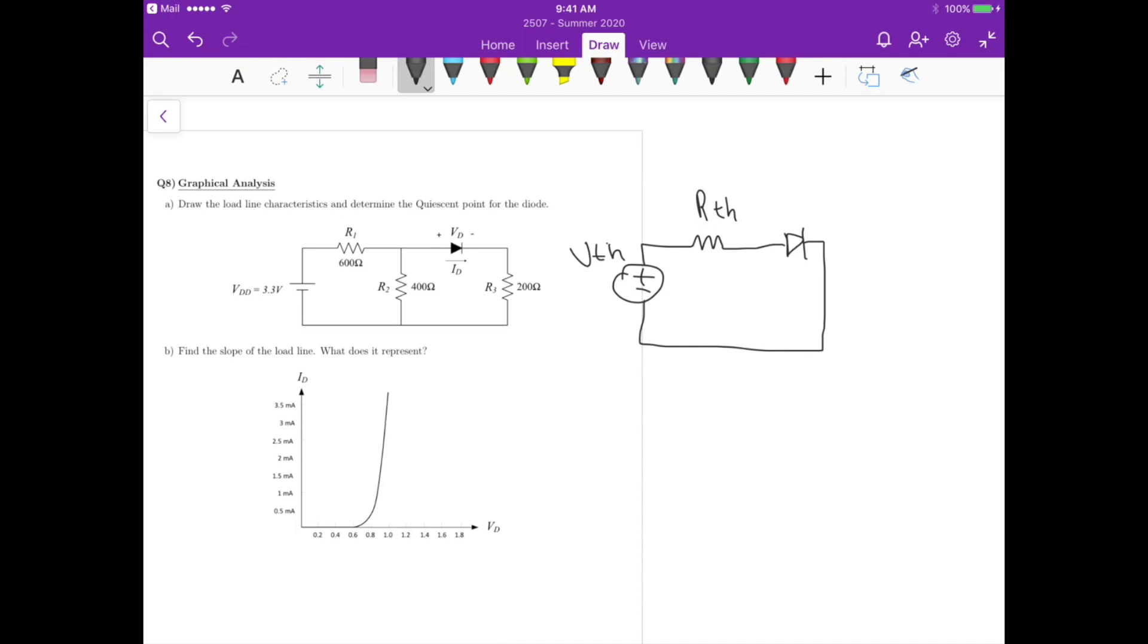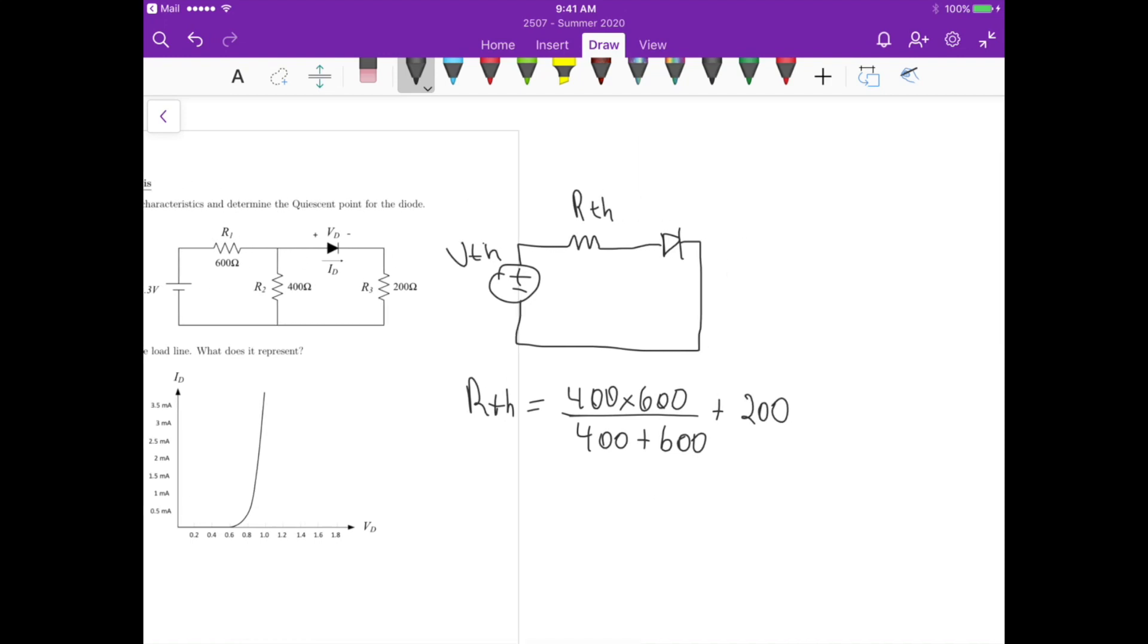So I'm basically modifying the circuit as if R3 was like before the diode, but it doesn't change the behavior for the load analysis. So in this case, how do we calculate the Thevenin resistance? It's just the 600 ohms in parallel with 400 ohms plus the 200 ohms. So RTH equals 400 in parallel with 600 divided by 400 plus 600, plus 200 ohms that we have for R3. So this gives us a Thevenin resistance that is 440 ohms.